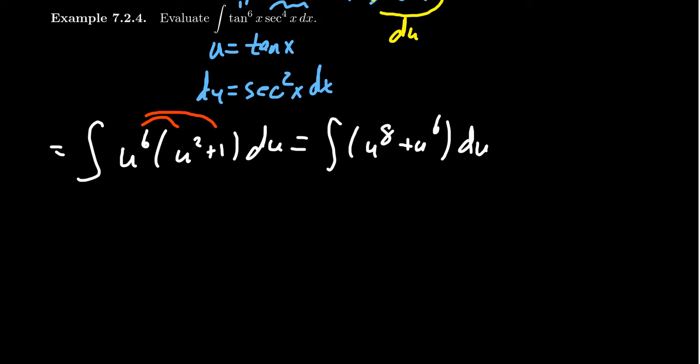And from here, using the power rule for antiderivatives, we can very easily find out the antiderivative will be one ninth u to the nine plus one seventh u to the seven plus a constant.